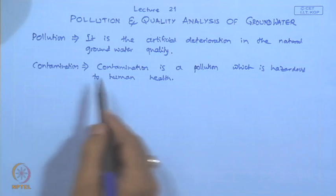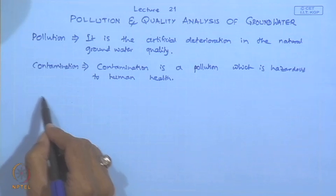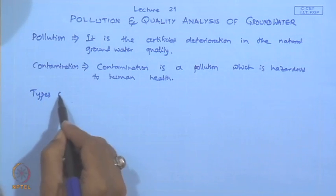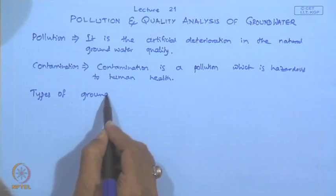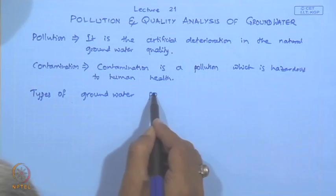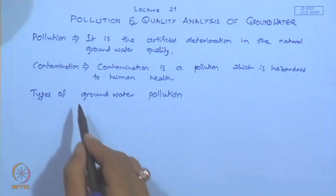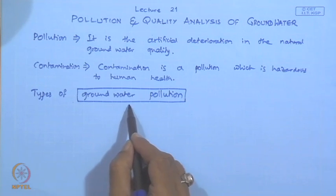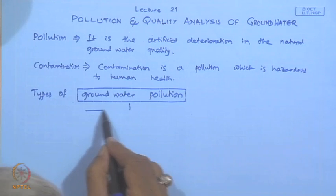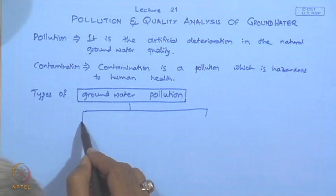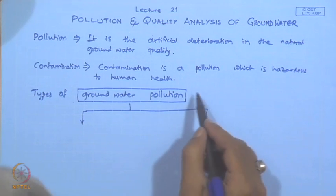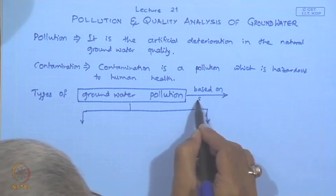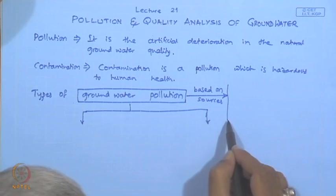There are various sources of pollution of groundwater. Let us briefly discuss the types of groundwater pollution. Groundwater pollution can be classified into various categories based on various criteria, such as classification based on sources of pollution.